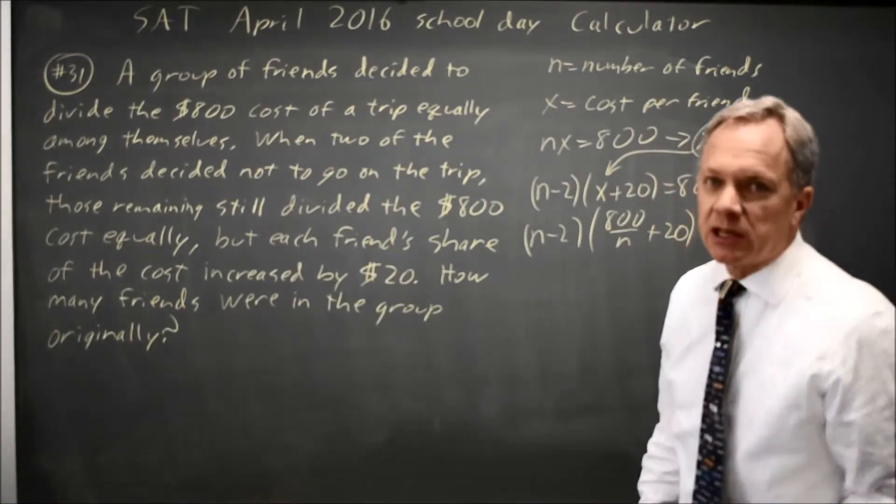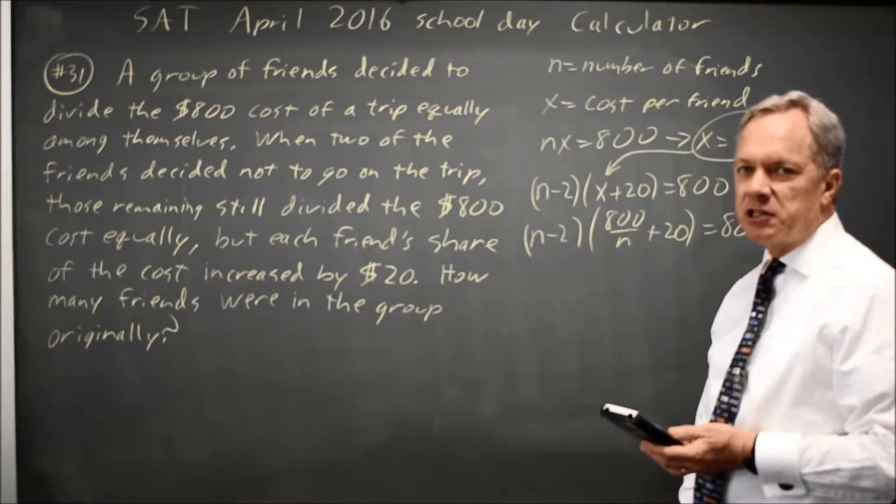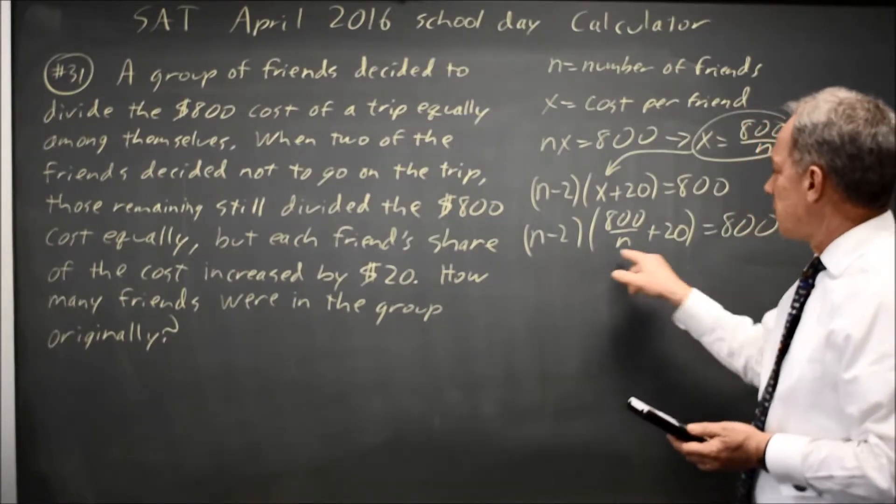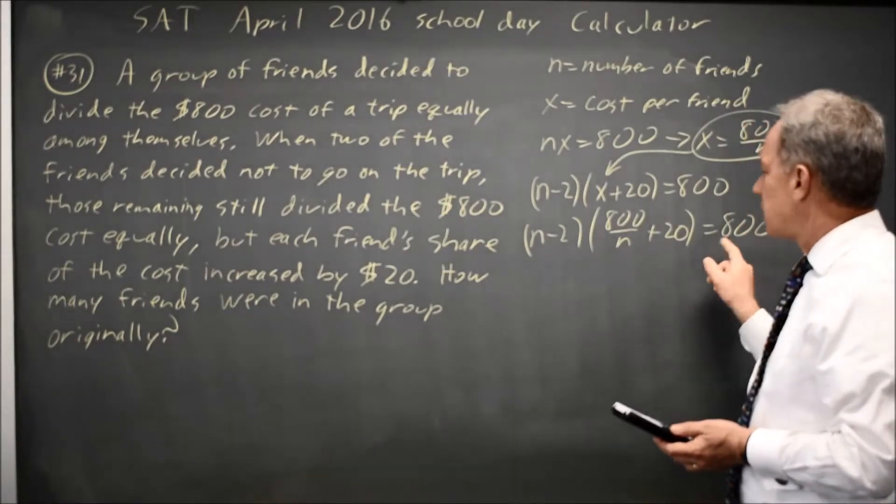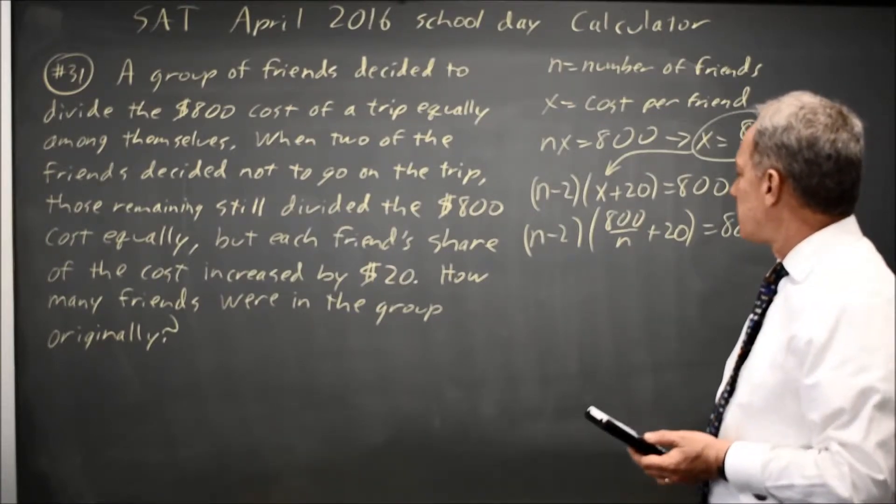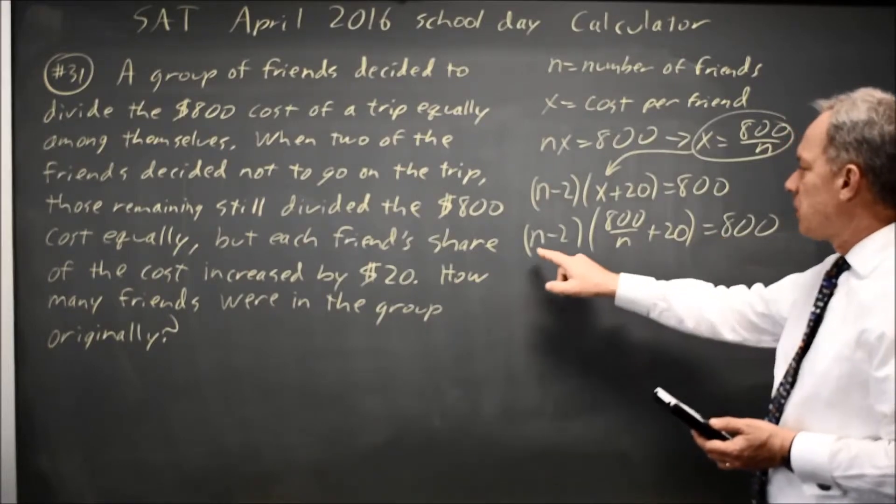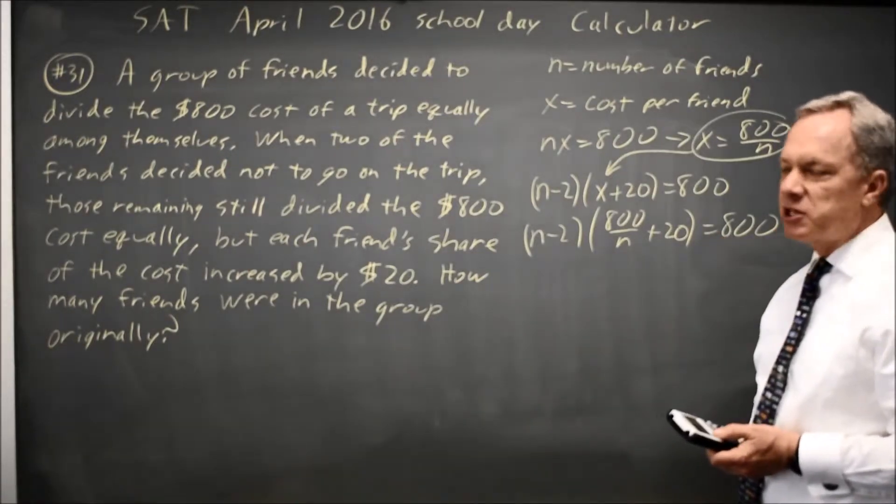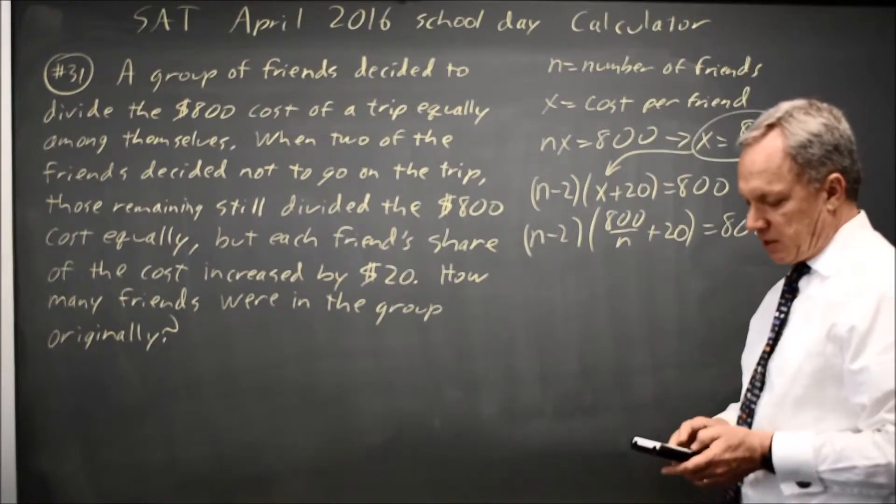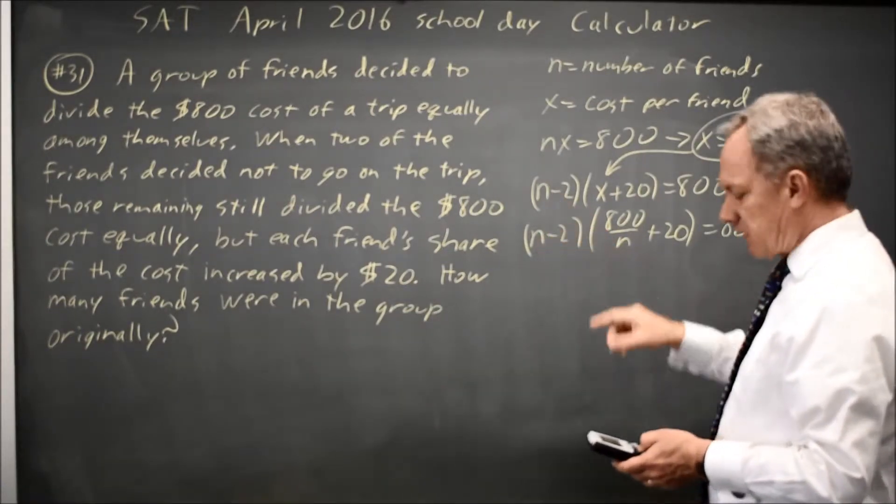I could solve that algebraically, but it's much faster to solve it on the calculator. Anytime you have an equation with only one variable, put the left side in y1, right side in y2, and find the intersection. I'm going to make my y max 1,000 so I can see 800. I'm going to make my x max 20, just to make sure I can see the number of friends. And I'm going to put in n as x.